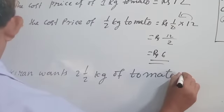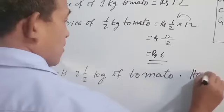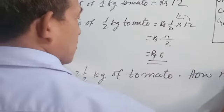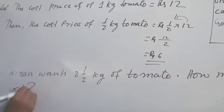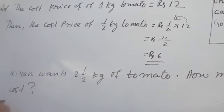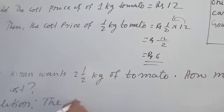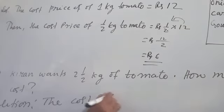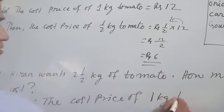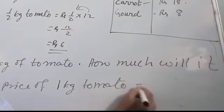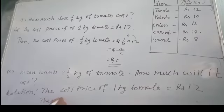How much will it cost? So here is the question. Now solution: here also you will write the same. The cost price of 1 kg of tomato is equal to rupees 12.